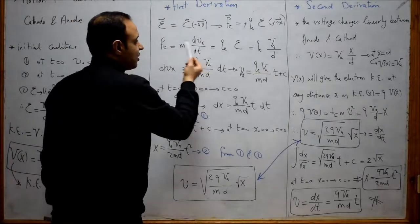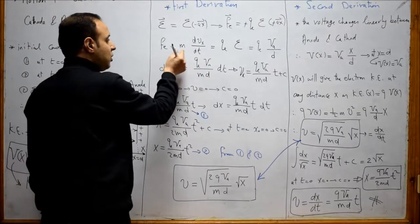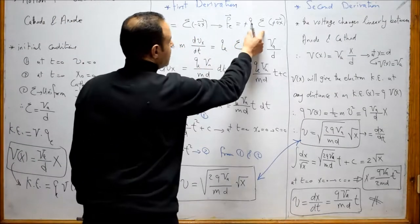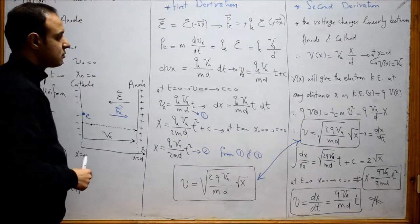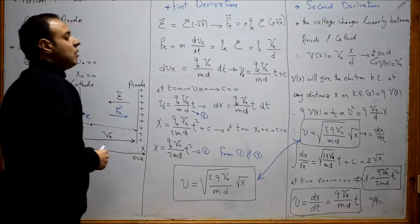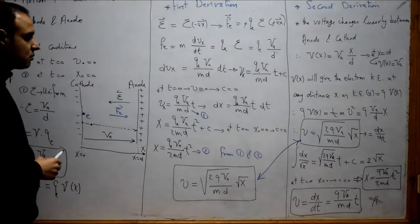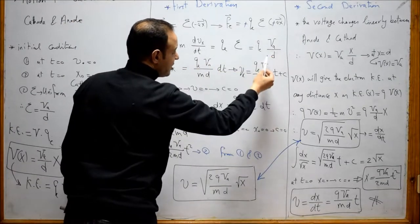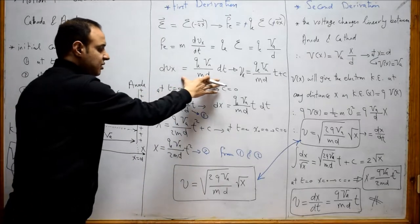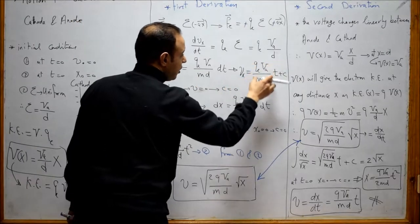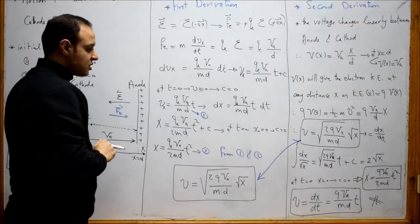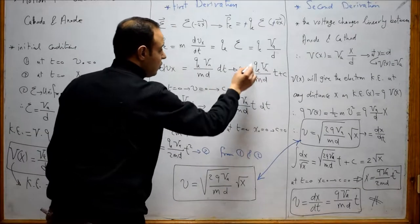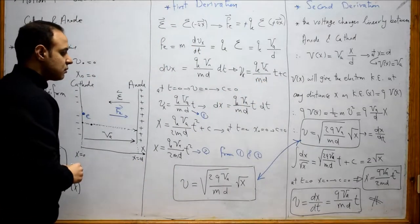This acceleration is the derivative of the velocity with time. So F equals m times acceleration, which is the derivative of velocity with time, equal to the charge multiplied by the electric field. The electric field is equal to Va over d, which is constant. So dV equals a constant times dt. Taking the integral of both sides, Vx equals (Q Va over m d) multiplied by t plus a constant. At t equal to 0, the velocity equals 0, so substituting gives C equal to 0.